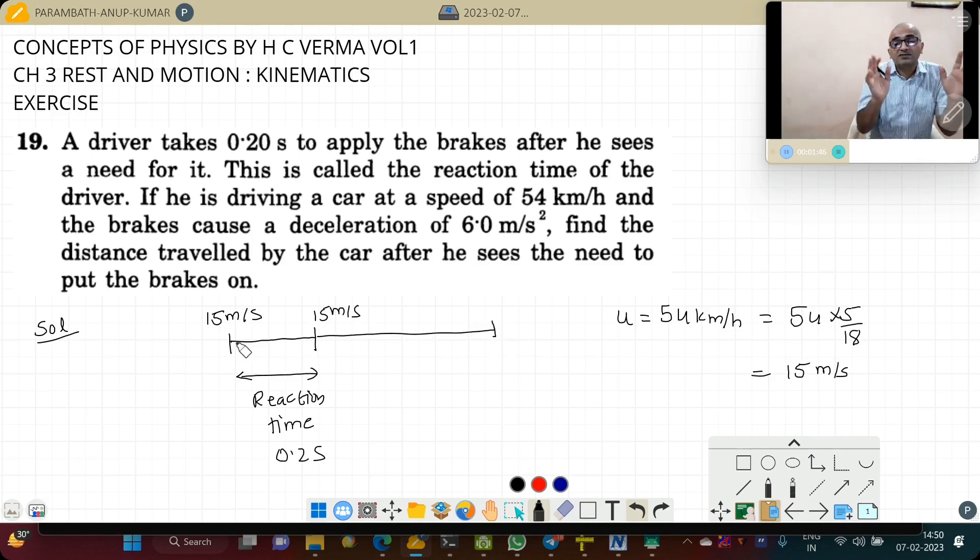Till that time brain was functioning, after that brake is functioning. So during reaction time there is no change in speed. And at this point the final velocity is 0 and he has a deceleration of 6 m per second square.